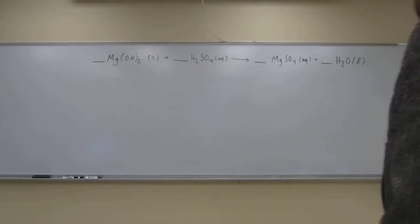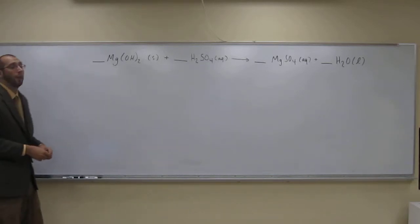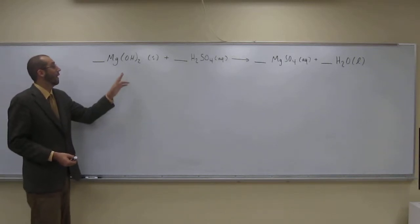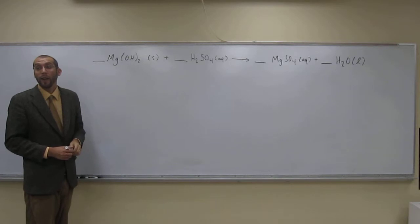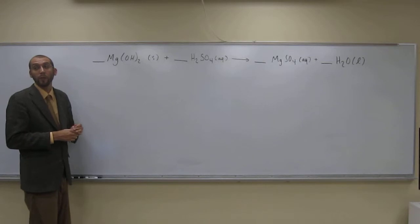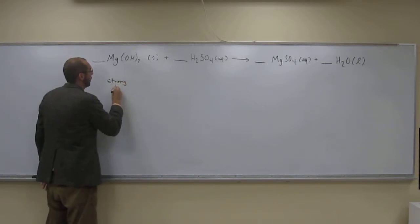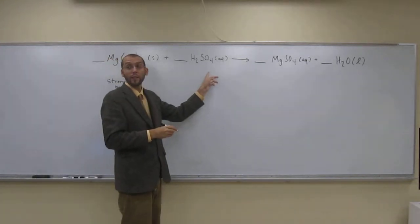Okay, so let's do another balancing reaction equation. I'm going to make the assumption, and I'm sure you already remember, that anything with an OH minus, the hydroxide here, like this magnesium hydroxide has, is a strong base. Hopefully you remember that from our discussions of acids and bases. So we have a strong base here, and here our sulfuric acid is a strong acid.